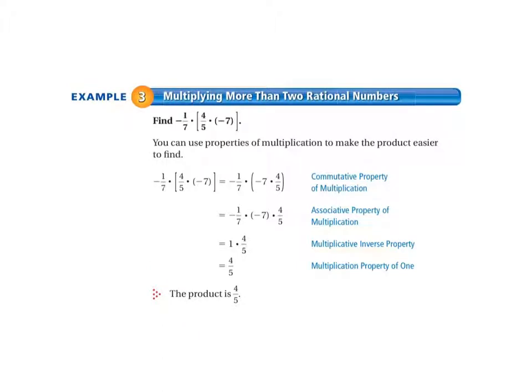Example 3: Multiplying more than two rational numbers. You can use properties of multiplication to make the product easier to find. They've grouped two of these together, so we have negative 1/7 times, and then they put in brackets, 4/5 times negative 7. An easy thing to remember is if you count up the negative signs in your problem, if you have an odd number of negative signs, your answer is going to be negative. If you have an even number, your answer is going to be positive. And that is when you're multiplying and dividing only.